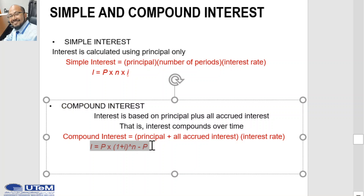Here is one formula we can use to calculate compound interest. The formula to calculate simple interest and compound interest is different. For compound interest, the interest formula is the principal times (1 plus interest rate) to the power of n, minus the principal value.